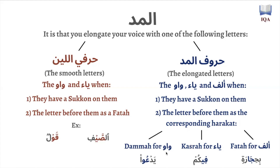What's meant by the corresponding haraka is the sister haraka for the letter. The sister haraka for the waaw is the dhamma, because the dhamma is just a mini-waaw — both make the same vowel sound, which is 'u'. The corresponding haraka for the ya is the kasra, because both make the same vowel sound, which is 'e'. And for the alif, it's the fatha, because both make the same vowel sound, which is 'a'.